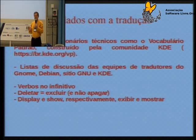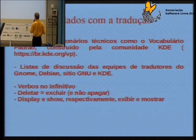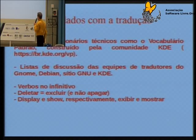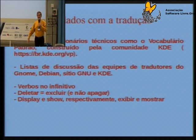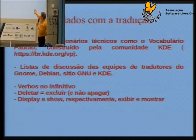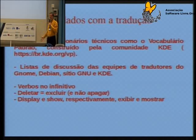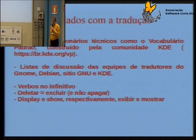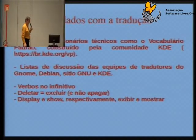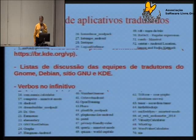Como é que uma pessoa que nunca fez tradução, não conhece a padronização, como ela procede? Uma das formas foi a maneira que a gente fez: se cadastrar nas listas de discussão — Gnome, Debian, Sítio GNU e KDE. São quatro listas bastante ativas e o pessoal está constantemente buscando e estabelecendo novas padronizações. A comunidade do KDE tem o vocabulário padrão, que é uma ferramenta ótima de pesquisa quando a gente tem alguma dúvida de como traduzir uma palavra.